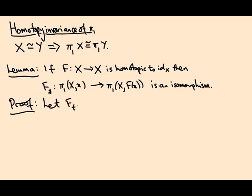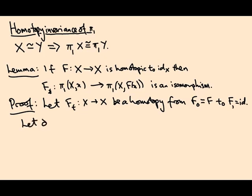Let F_t be a homotopy from F₀=F to F₁=id. Let δ be the path traced out by the base point x under this homotopy, so δ(t) is F_t(x). The point is this homotopy might well move the base point around, but we know how to deal with that.